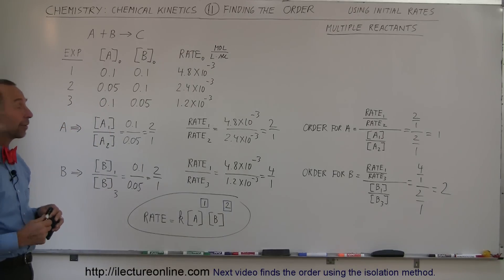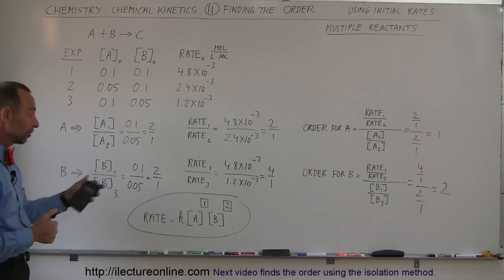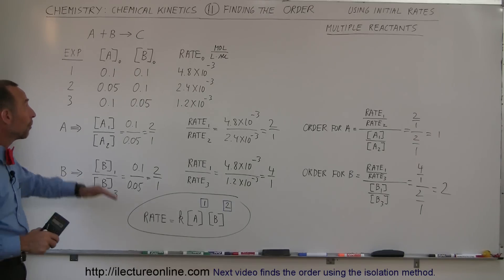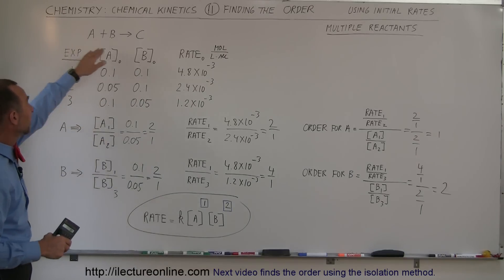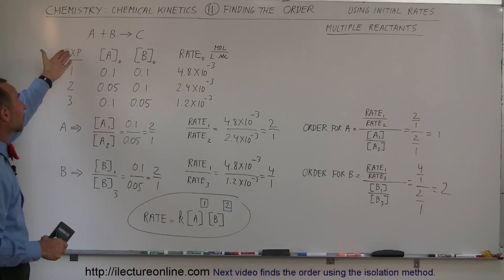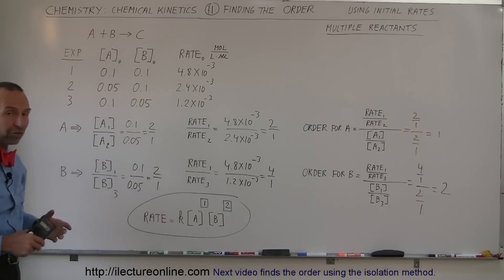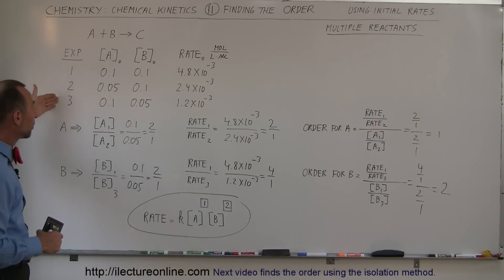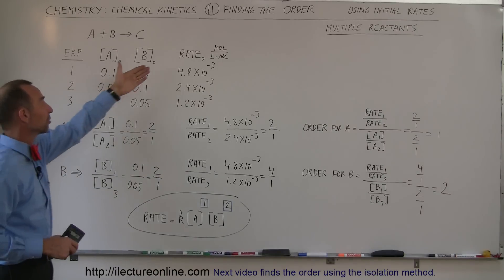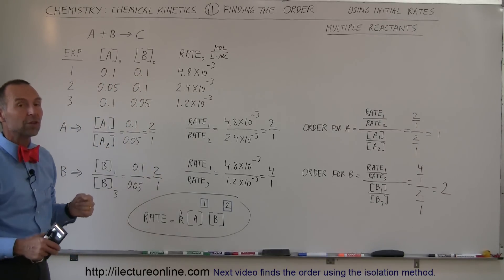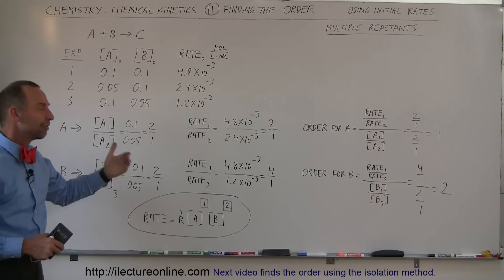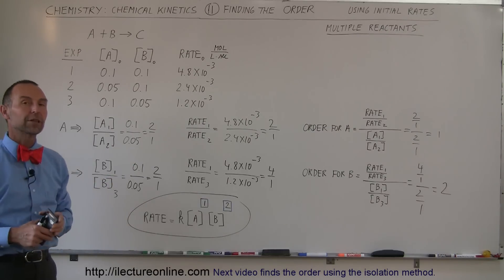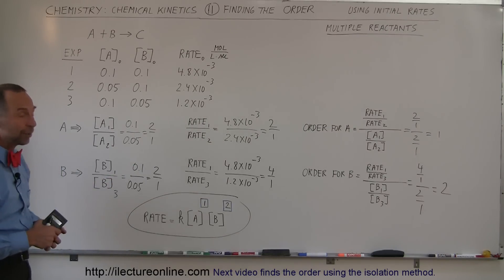That's how we figure out the order of the various reactants. We don't go by the coefficients of the reactants and products in the balanced equation. Instead, we simply do experiments, measure the rates and concentrations, and find the ratios to determine the orders for the different reactants.